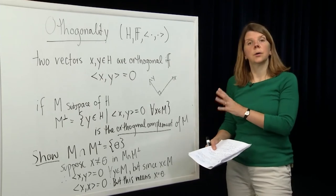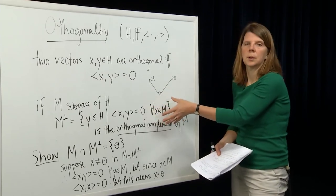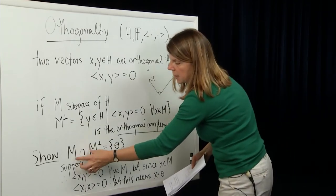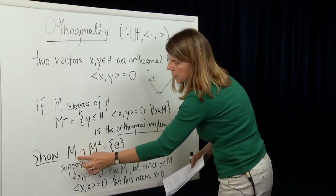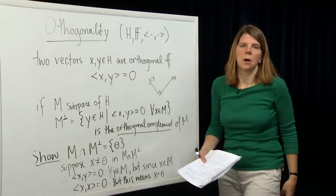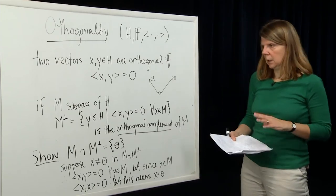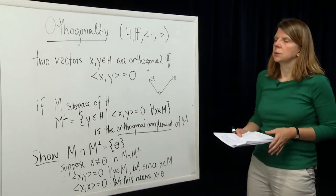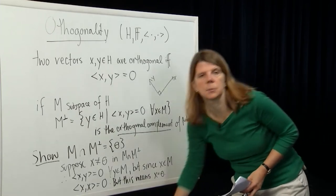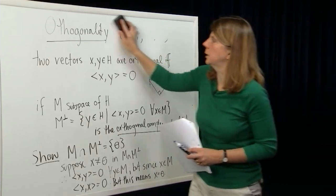So we've defined orthogonality of vectors, we've defined orthogonal complements of subspaces, and we've shown that the only vector common to a subspace and its orthogonal complement is the zero vector. Now let's move on to a very important concept also building on inner products: the adjoint map.